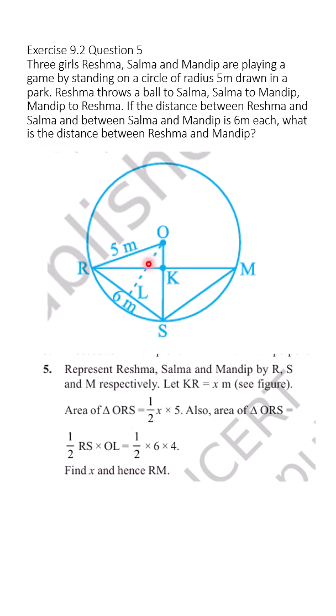So we do a construction here. Triangle RSM is made. We join OR, and the OR value given is 5 meters. We will drop a perpendicular from O onto RM. So this perpendicular is dropped here like this and we will extend it. Now we will make triangle ORS.